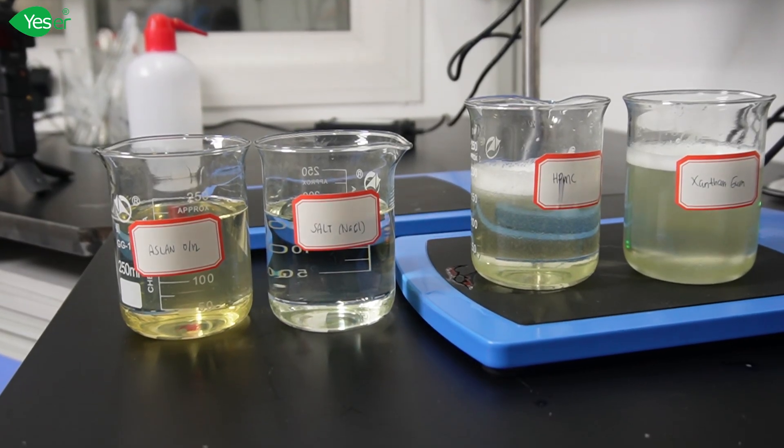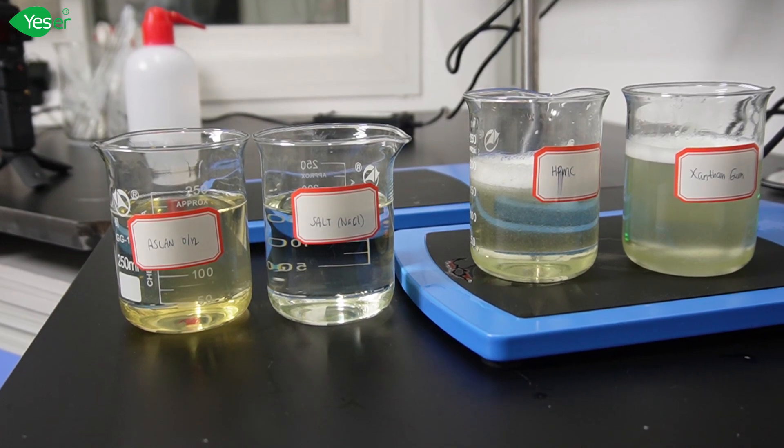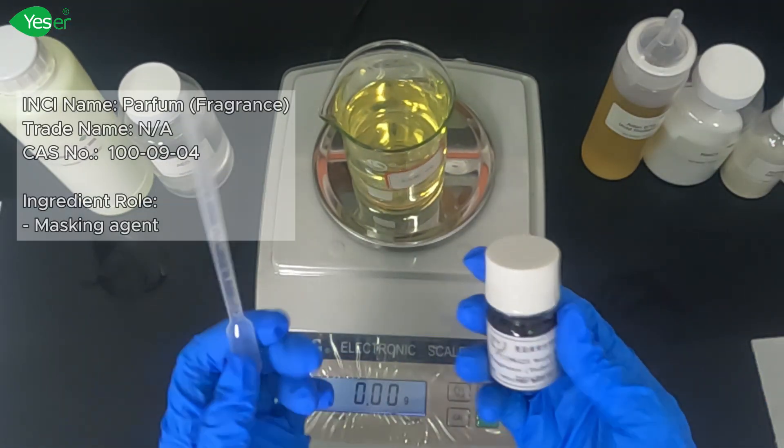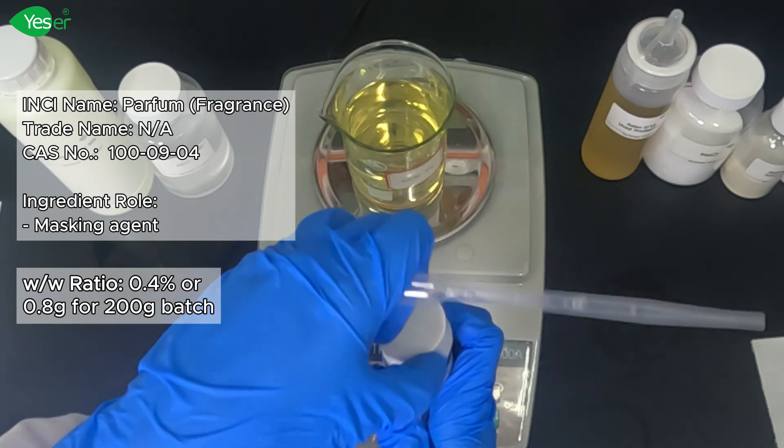Now that all our thickeners are fully dissolved in the formula, we will now add all of our additives, such as dye and fragrance. Let's add 0.8 grams of our fragrance, that would be 0.4% for our formula.